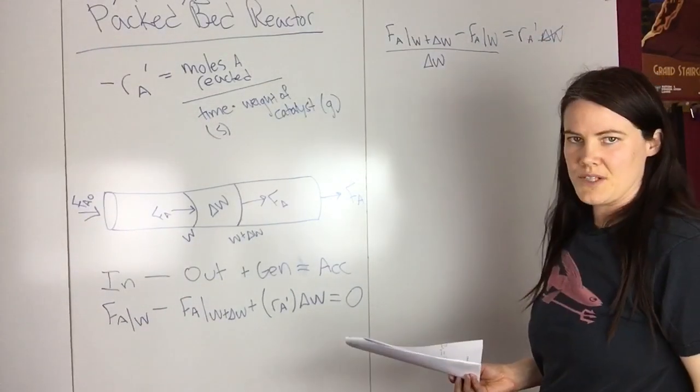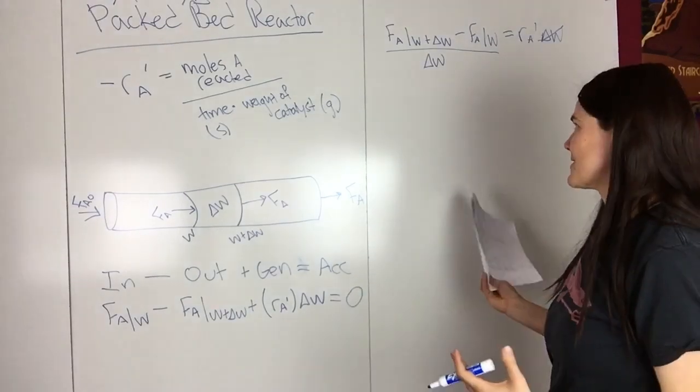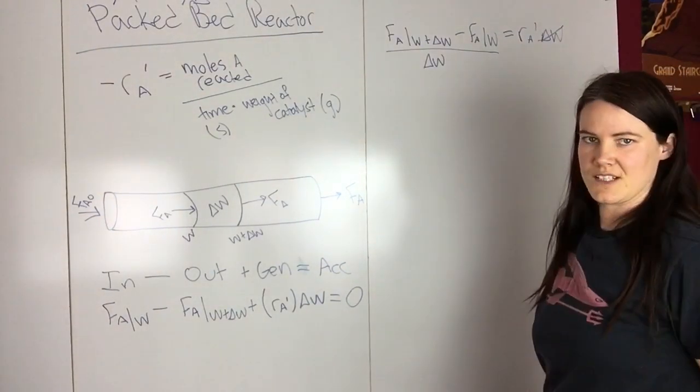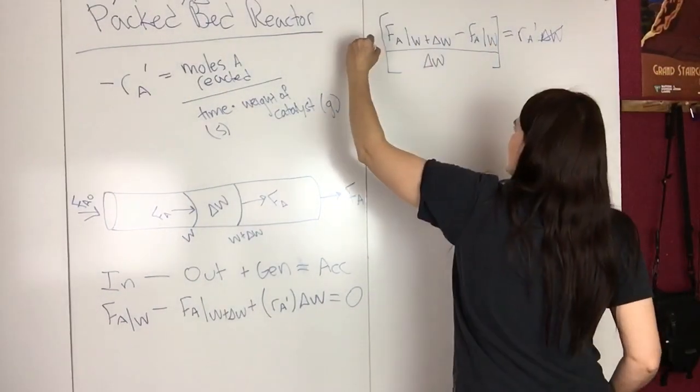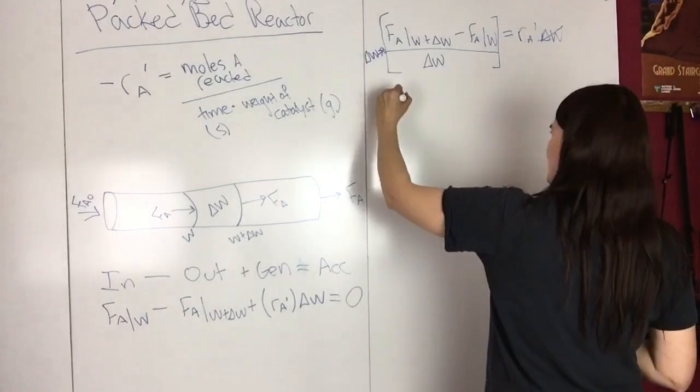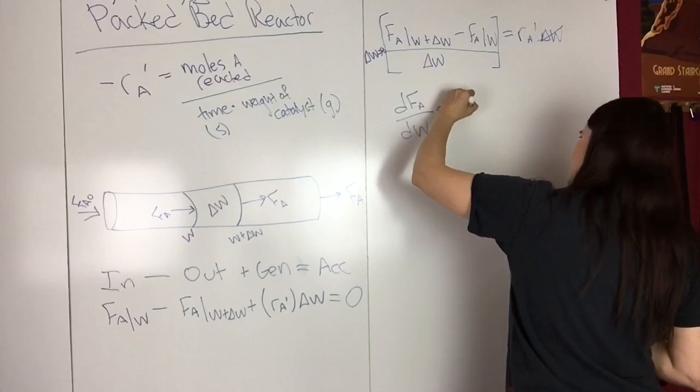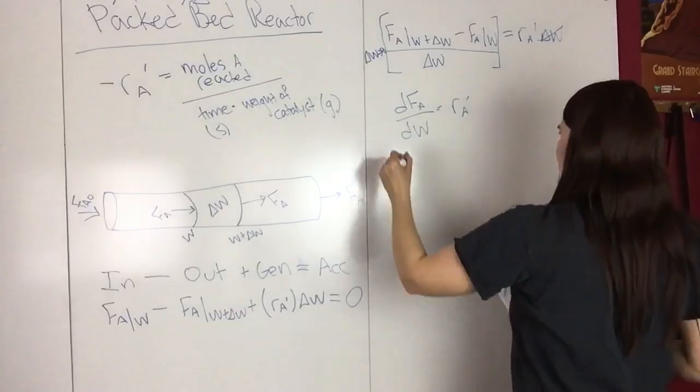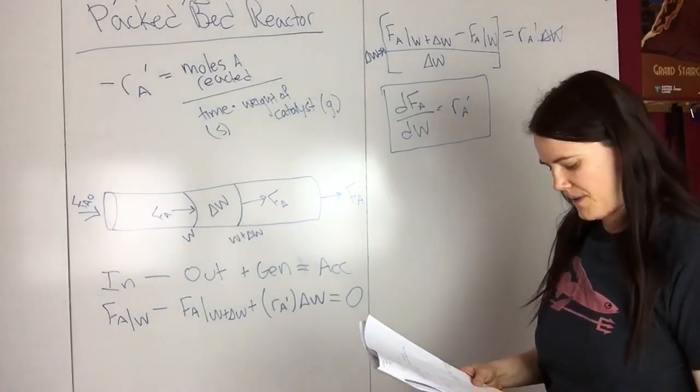And then if you watch the video on the mole balance for a PFR, this is pretty much the same, so if you look at the definition of a derivative, this looks pretty much like the definition of a derivative. So if we take the limit as delta W approaches zero, then we end up with dF_A/dW equals R_A prime. And so that's the differential form of the mole balance for a packed bed reactor.